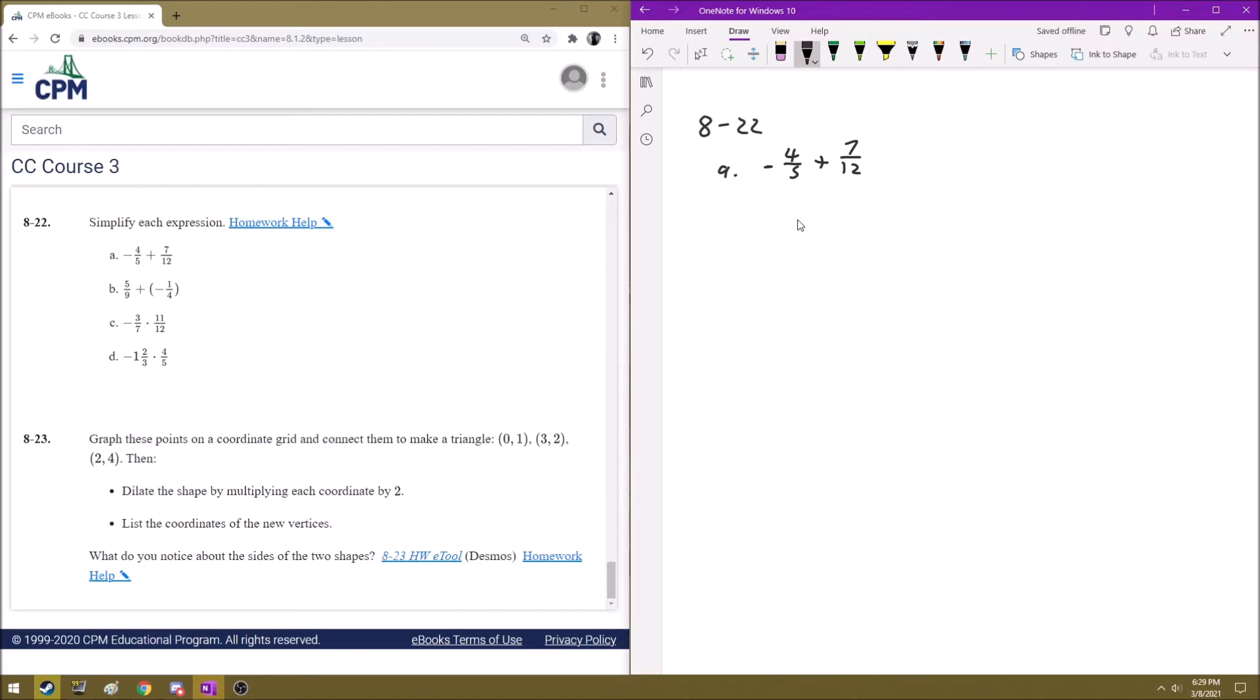So we need to find a common denominator, and we have 5 and 12. So I think 60 would be the smallest denominator. So we need to make both of these 60, which is just 5 times 12. So over here on the left, to get 5 to 60, we multiply it by 12. So let's do the same to the top. So we'll have 12 times 4, which is 48 over 60.